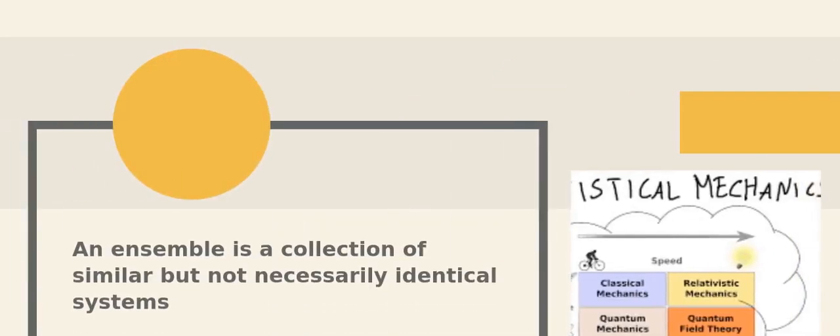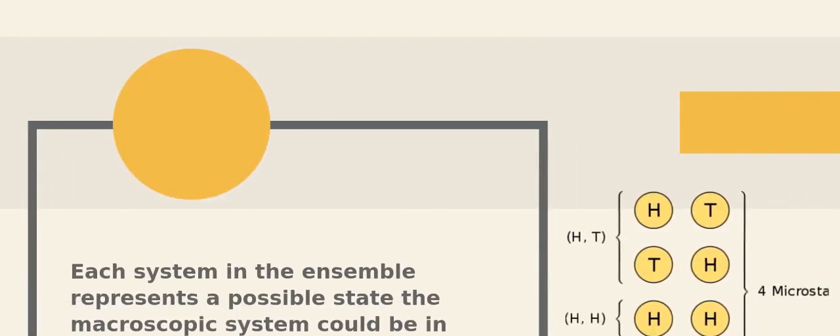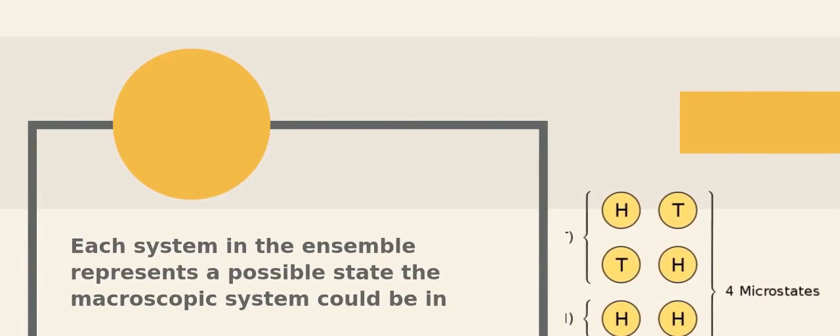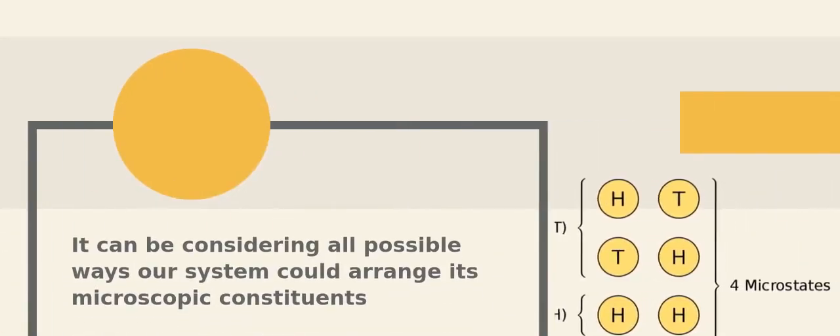An ensemble is a collection of similar but not necessarily identical systems. Each system in the ensemble represents a possible state the macroscopic system could be in. It can be considering all possible ways our system could arrange its microscopic constituents.